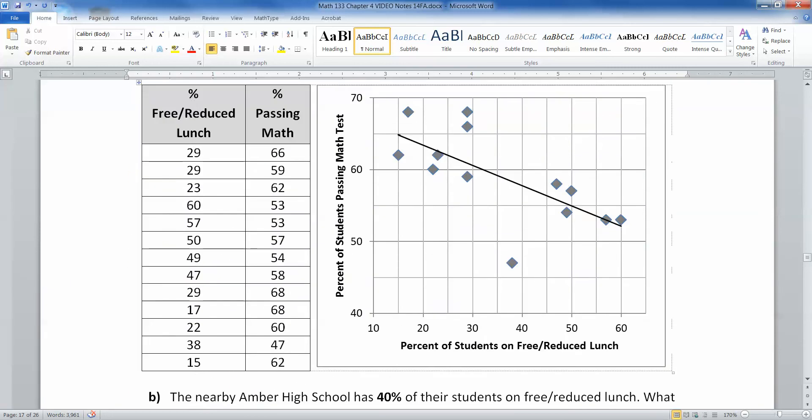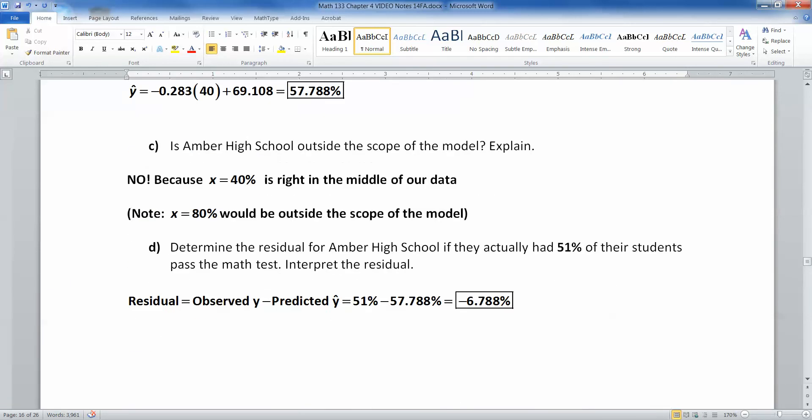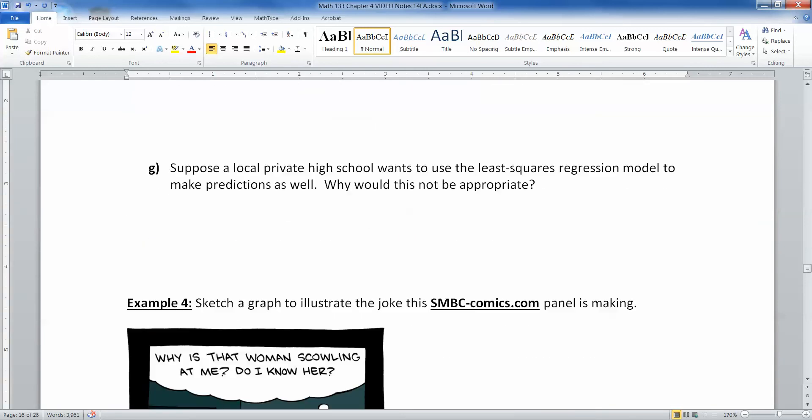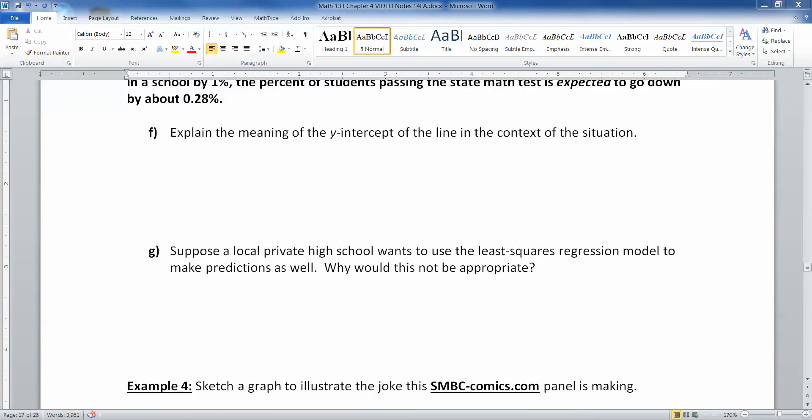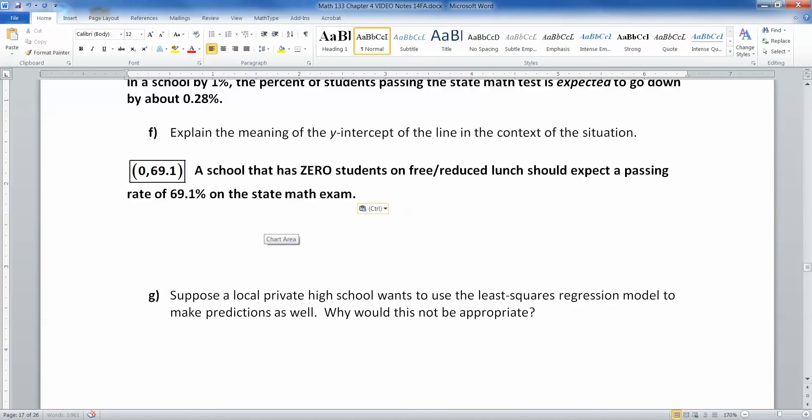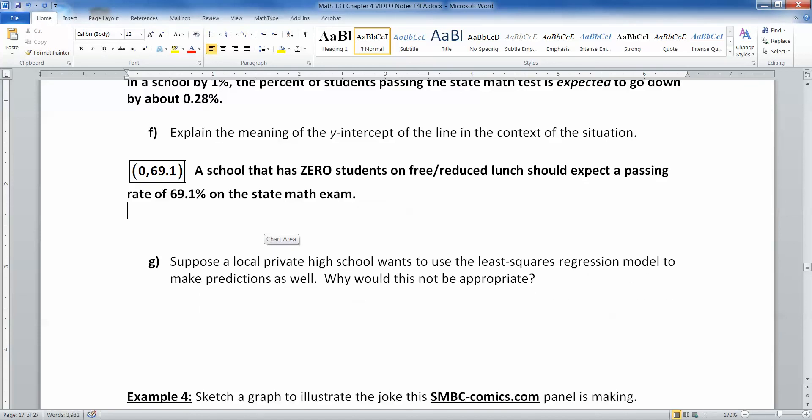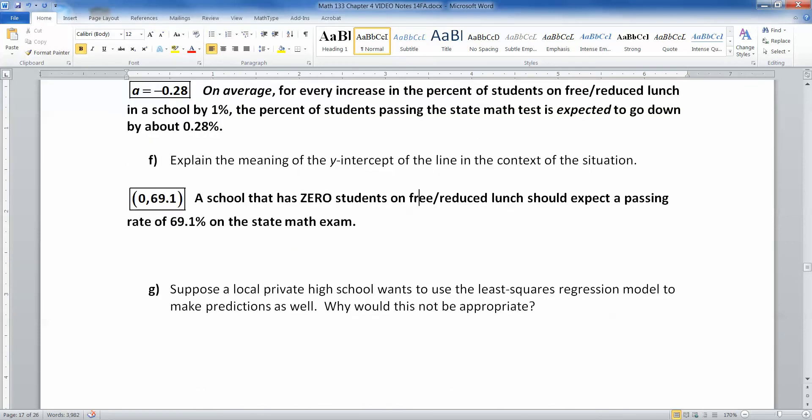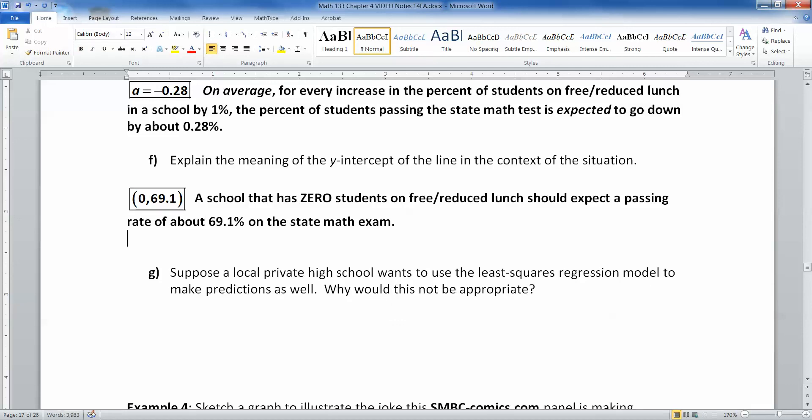Now what about the Y intercept? The Y intercept is 69.108. So 69.1. What does that mean? Well, that means that if a school has zero students that are on free reduced lunch, then they would expect about 69.1% to pass the state exam. And that's what I wrote here. A student that has zero students on free reduced lunch should expect a passing rate of about 69.1% on the state math exam. Again, it's not set in stone. It's just what you kind of guess it to be.